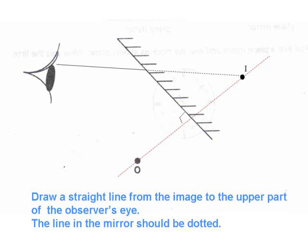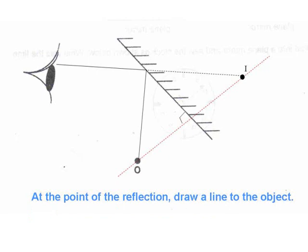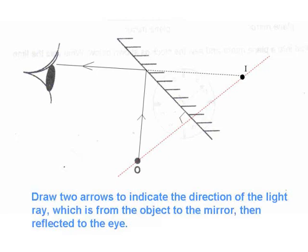Next, from the image in the mirror, you draw a line to the eye. And at the reflection point, you draw a line to the object, and then now you draw two arrows from the object to the eye.